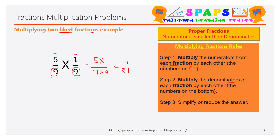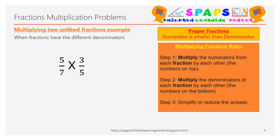Five cannot divide 81 evenly, so you cannot simplify further. This is the simplest form of the fraction, so just leave it as five by 81. That is how you multiply two like fractions. Let's move on to the next one: multiplying two unlike fractions.